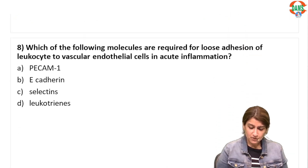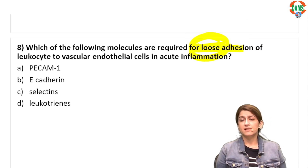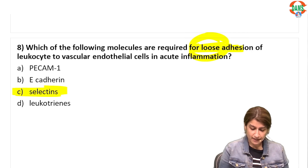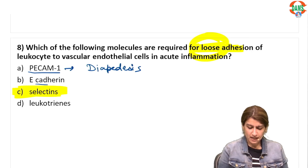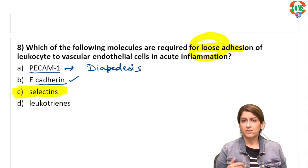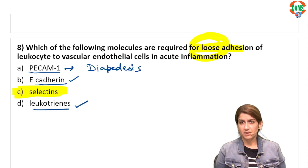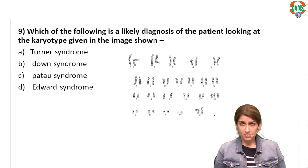Which molecules are required for LOOSE adhesion of leukocytes to vascular endothelial cells in acute inflammation? For rolling and loose adhesion, selectins are needed. PECAM-1 is important for diapedesis. E-cadherin is for cell-to-cell interaction and its downregulation relates to metastasis. Leukotrienes are mediators of inflammation. The correct answer is selectins for rolling and weak adhesion.